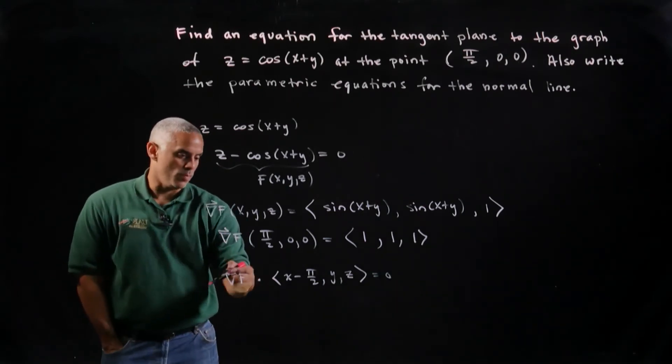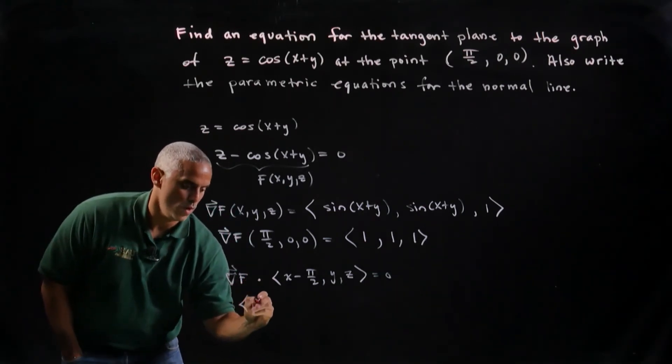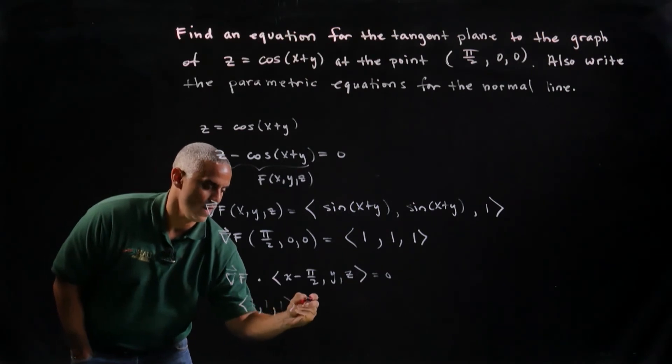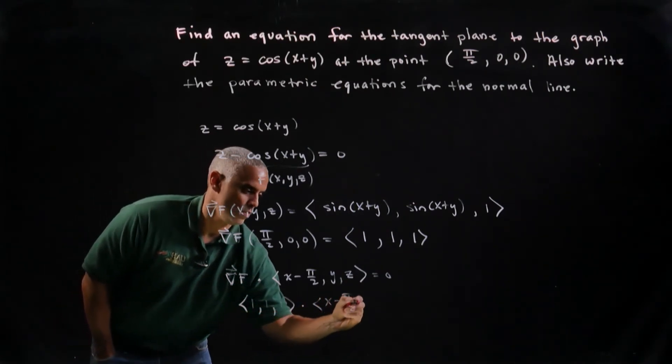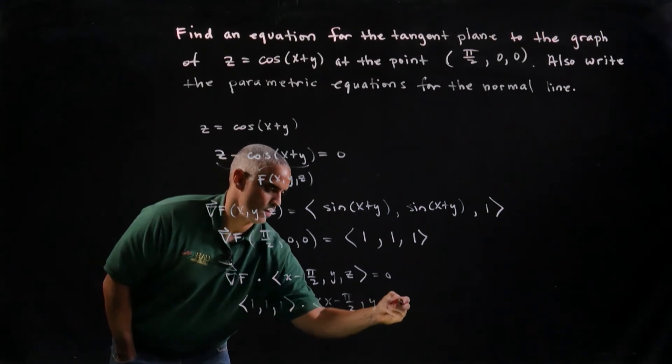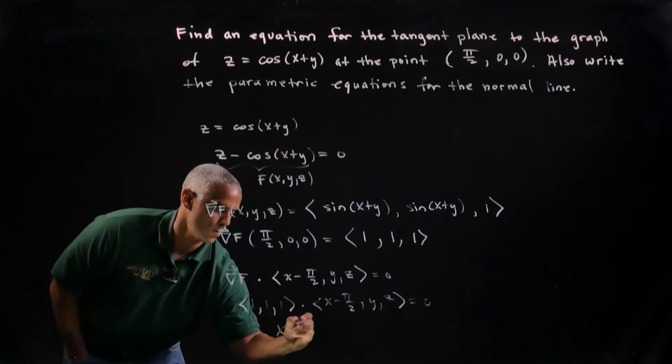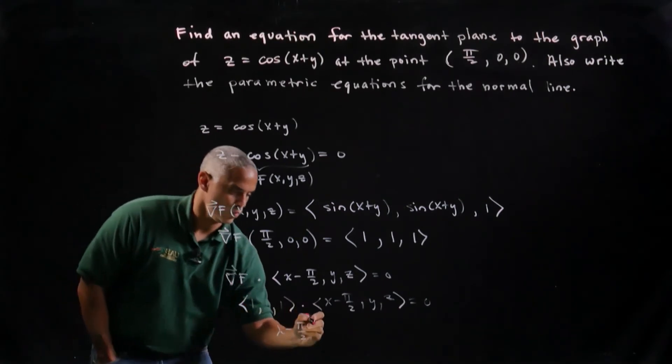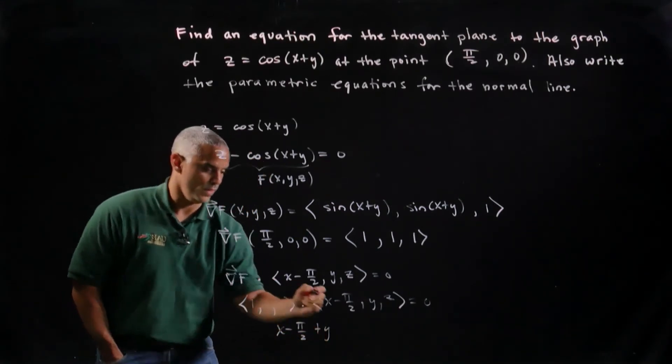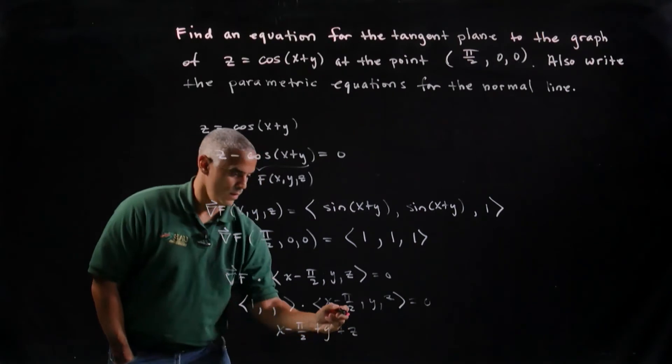And if I take the components, let's say my 1, 1, 1, dotted into x minus pi over 2, y, z, and I dot them, I'll get x minus pi over 2 plus y plus z equals 0.